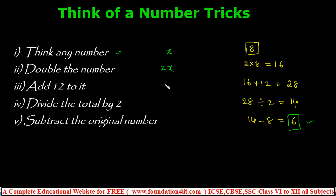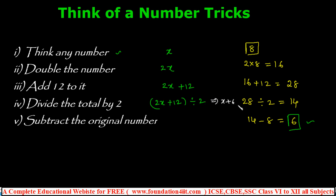Add 12 to it: 2x + 12. Note: 2x is a variable term, 12 is a constant, so it stays as 2x + 12. Divide the total by 2: (2x + 12) ÷ 2 = x + 6. Now subtract the original number x: (x + 6) − x = 6. The x cancels, and you always get 6. Any number you take, this process always gives 6.